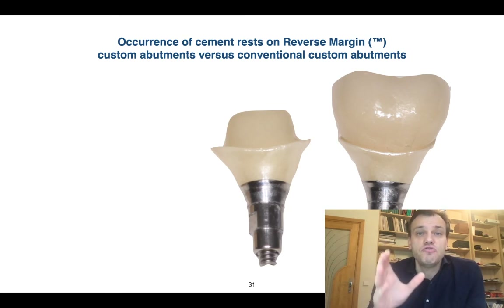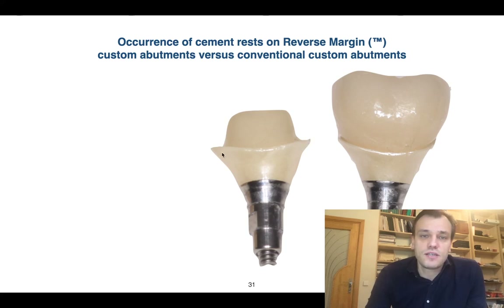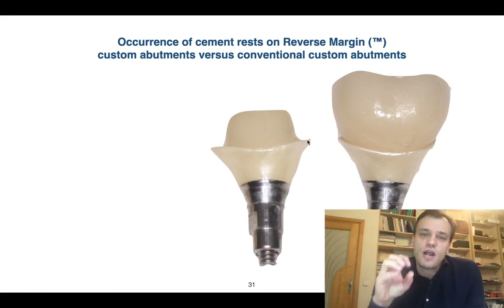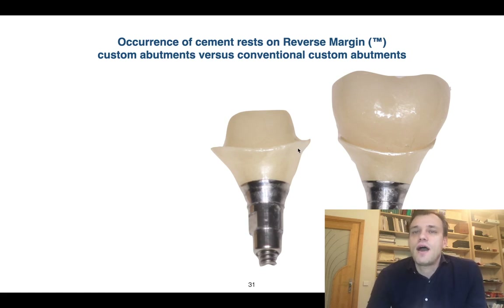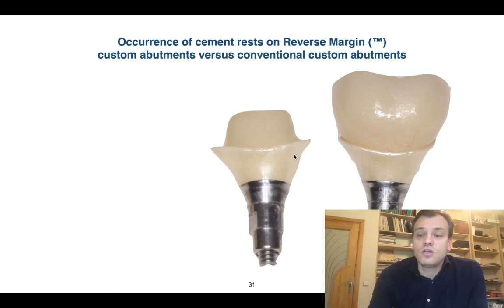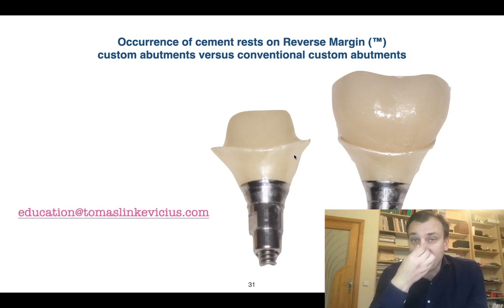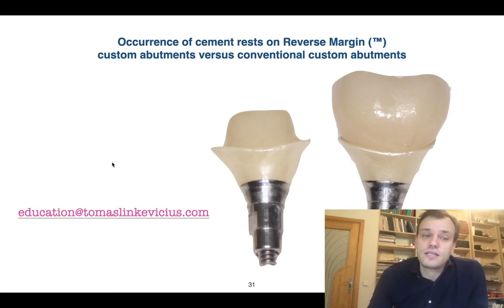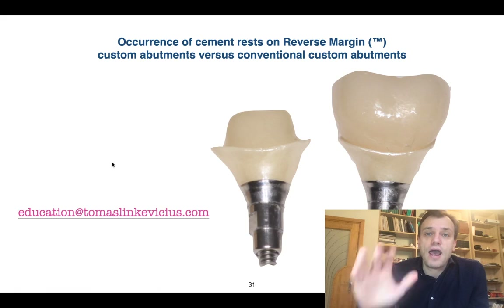To wrap up — take-home messages: reverse margin abutments, with the margin line pointing upwards, have better chances of preventing cement remnants from going below the cementation line. However, they do not give you a 100% guarantee of stopping cement remnants. Thank you, and I hope to see you online. If you have any questions, write to: education@thomaslinkavicius.com.